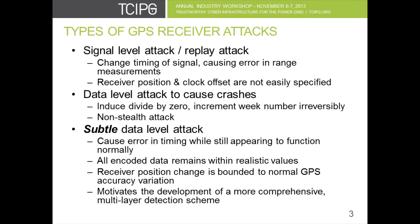So there are a number of different types of attacks that have been shown on GPS receivers. The first one is a signal level attack, also called a replay attack. This involves changing the timing of the GPS signal in order to introduce offsets in the range measurements to the satellites. This in turn causes errors in the calculation to the receiver position and to the receiver clock offset.